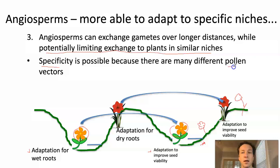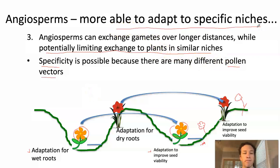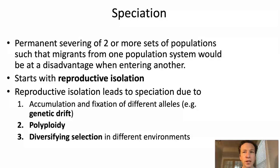This specificity due to pollen vectors allows the potential for differentiation of plants to be well-suited to a variety of different niches. When we talk about a population differentiating into different groups each adapted to a different niche, we're really talking about part of the process of speciation. So let's define speciation.